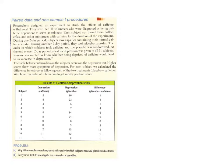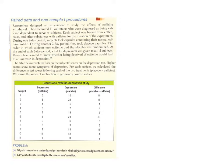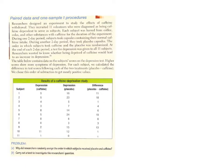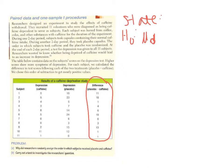Part B has us carrying out a test to investigate the researcher's question using our four-step process. For step one — the state part — our null hypothesis is that our mean difference equals zero, meaning the removal of caffeine does not impact their depression score and they'd have the same score both times. Our alternative hypothesis is that the mean difference does not equal zero, because they didn't specify one way or the other.